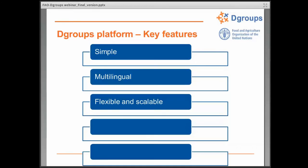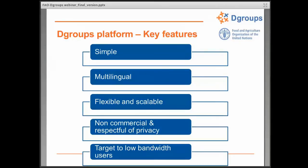There are basic stats tools and basic usage reports, and groups can be open or closed. There are also RSS and API facilities to integrate a dGroup into other web pages. Very importantly for many users, it's non-commercial and respectful of privacy. You might ask why not just use a Google group – and that's really one of the big reasons people use dGroups: it sits within our own servers, there's no advertising, and data isn't being shared with third parties for their purposes.